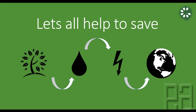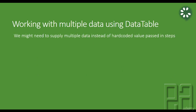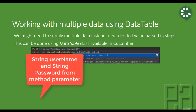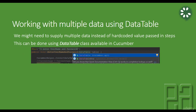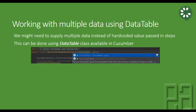Working with multiple data using DataTable - we might need to supply multiple data instead of hardcoded values passed in the steps. In our previous video part 5, we discussed about passing values from a step definition using string parameters and arguments from a feature file. That's fine if you have a single data, but what if your step has multiple values like username, password, first name, last name, email, phone numbers, address? Passing them all as arguments would be very cumbersome.